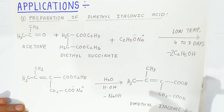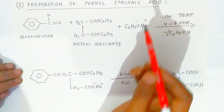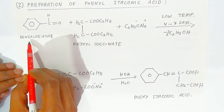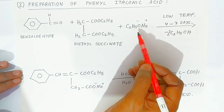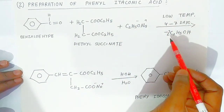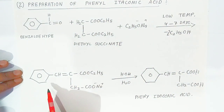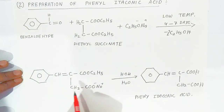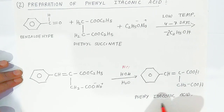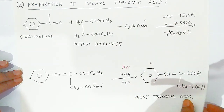The second application is the preparation of phenyl itaconic acid. Benzaldehyde reacts with diethyl succinate in presence of sodium ethoxide as a base at low temperature over 4 to 7 days, with elimination of ethanol. The Stobbe condensation takes place between benzaldehyde and diethyl succinate, and upon acid hydrolysis, phenyl itaconic acid is formed.